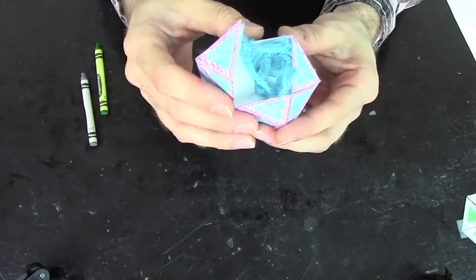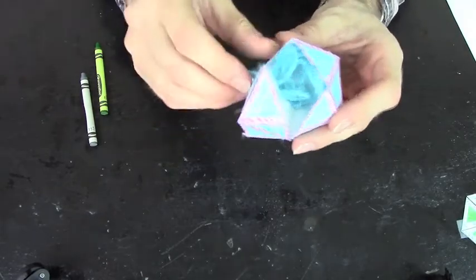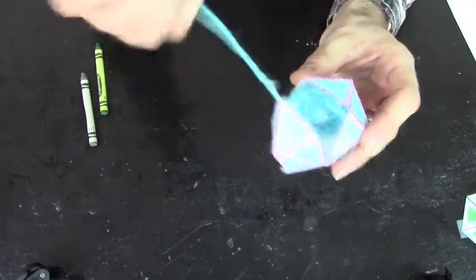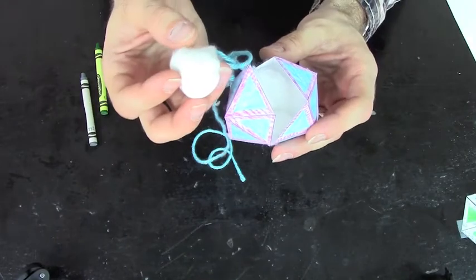Scientists sometimes call the capsid an envelope and inside it they find DNA represented by the yarn and protein information represented by the cotton ball.